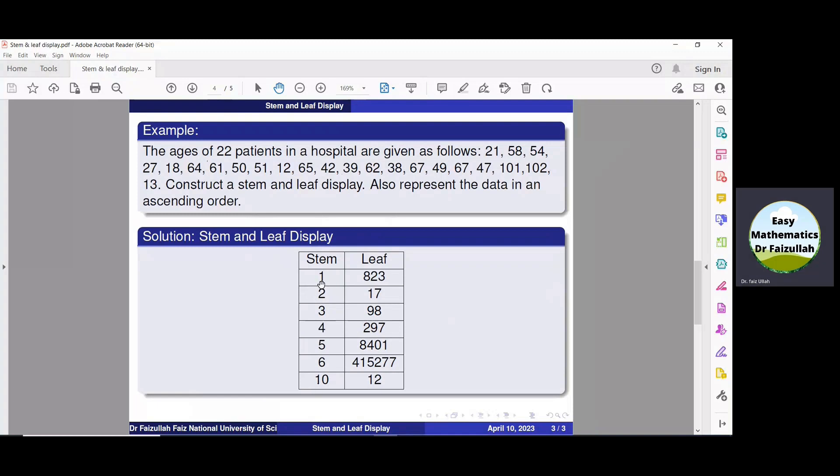Now, let us find all those numbers in this data whose first part is 1. So the first number is 18, 8 will go to the leaf. The next is 12, 2 will go to the leaf. The next is 13, 3 will go to the leaf.